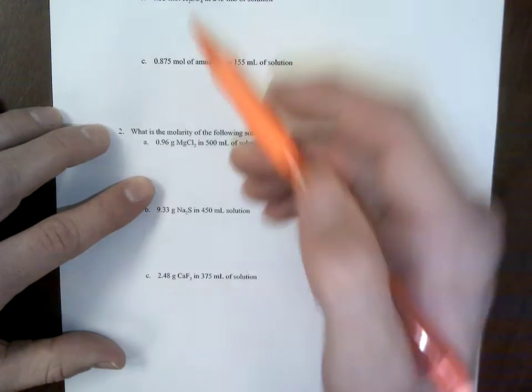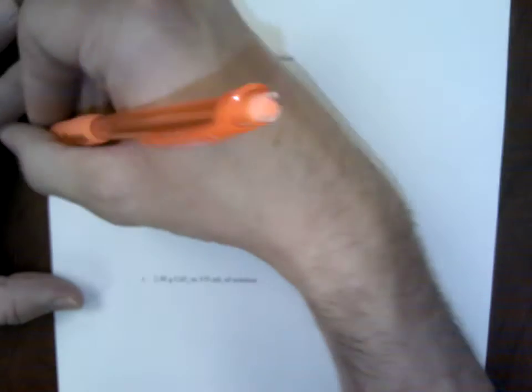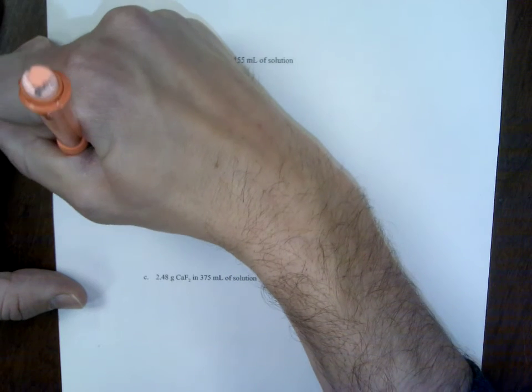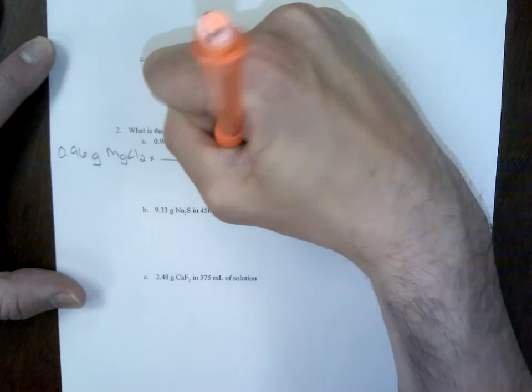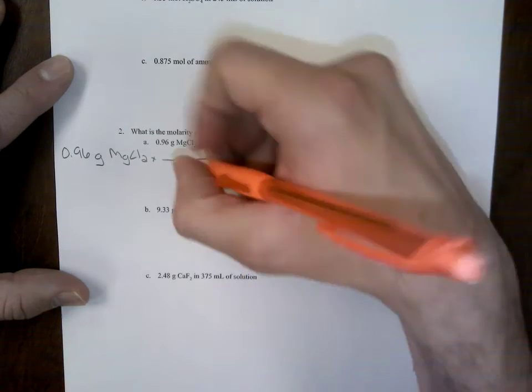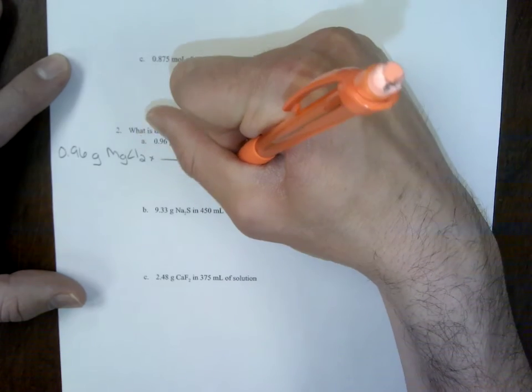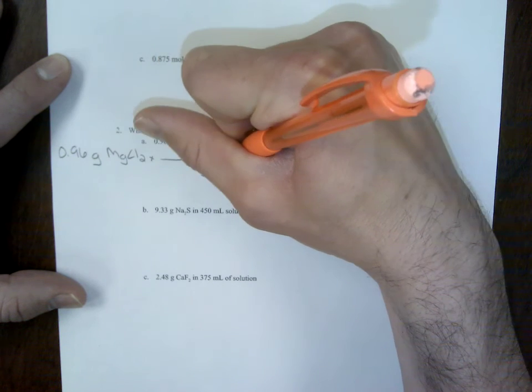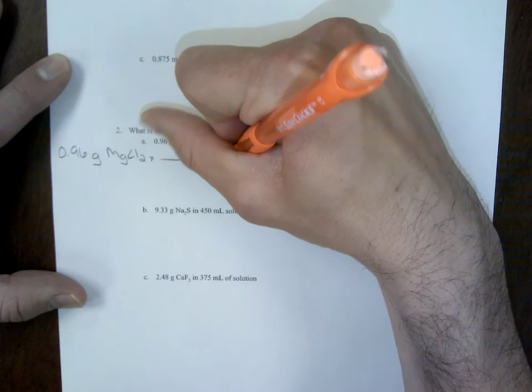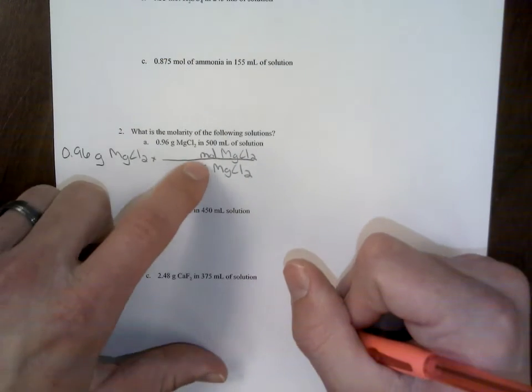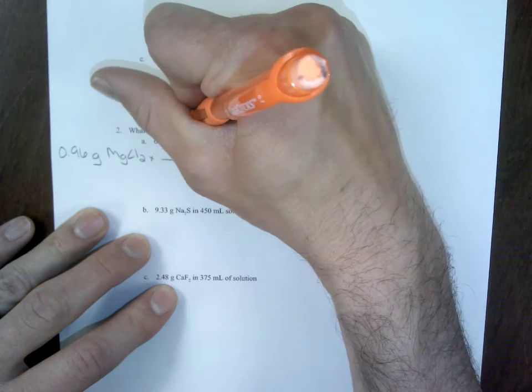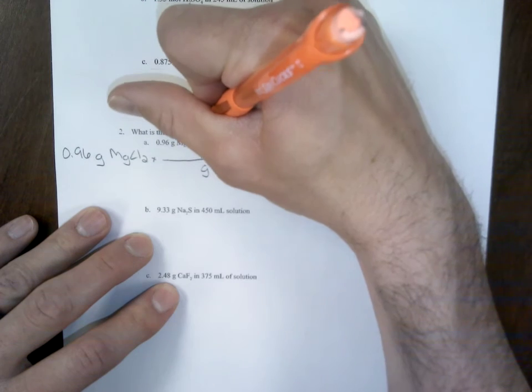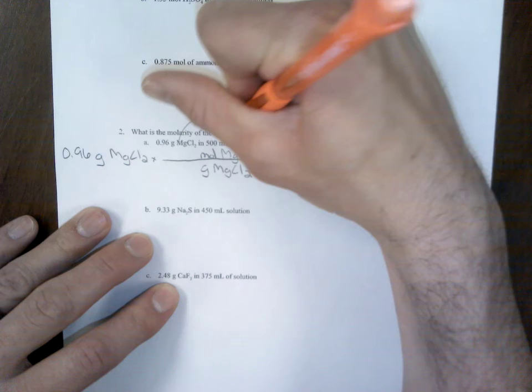The first thing that we need to do is we need to get moles of solute. We have grams, so we need to do a conversion. We start out by writing down 0.96 grams of MgCl2, and we set up our conversion. We always cancel units diagonal, so we have grams of MgCl2 on bottom, and on top we can have moles of MgCl2.